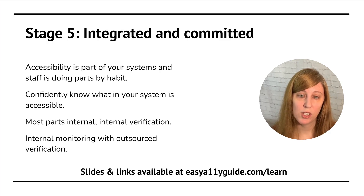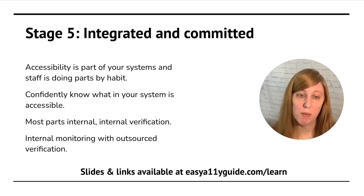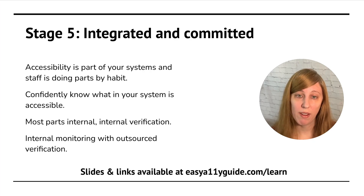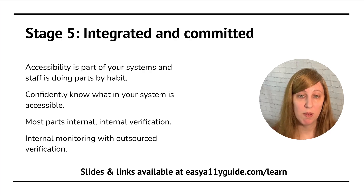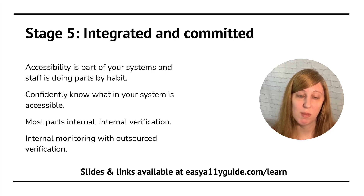Stage five: integrated accessibility and committed to increasing it. Some agencies stop at stage four and choose to keep a bit of their accessibility outsourced — that's okay. But plenty of agencies move on to stage five and may even move all the way to stage six. It just depends on what your priorities are and how much you want to keep outsourced versus how much you want to do in-house. It also can come down to budget and costs — sometimes it is just easier to not have those people as actual full-time staff.